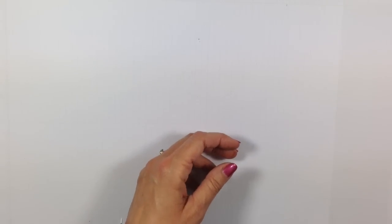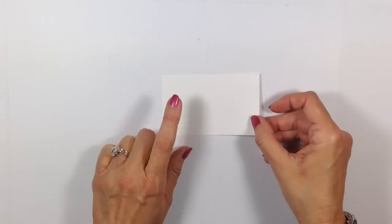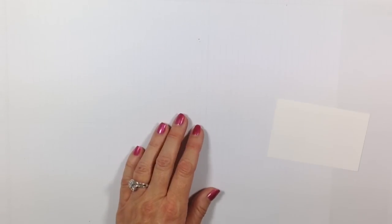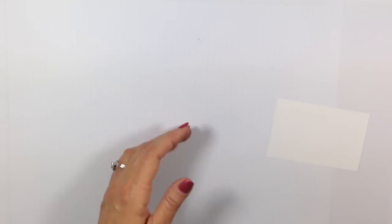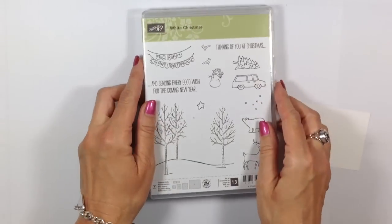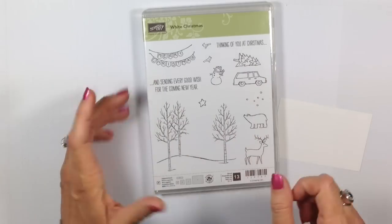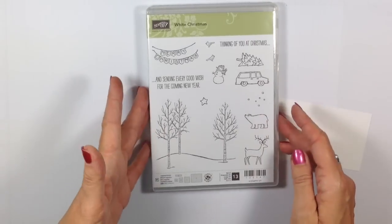Now we're going to work with our Whisper White. We're going to be using a stamp set called White Christmas. Really a fantastic stamp set. We're going to use the trees and the snowflake, but there's so much in this set.